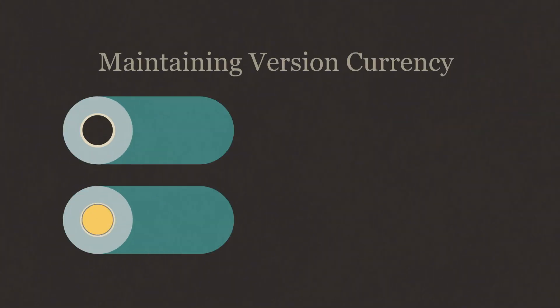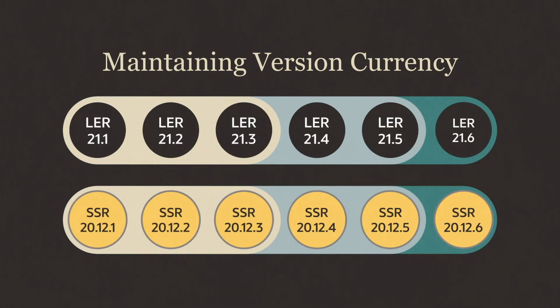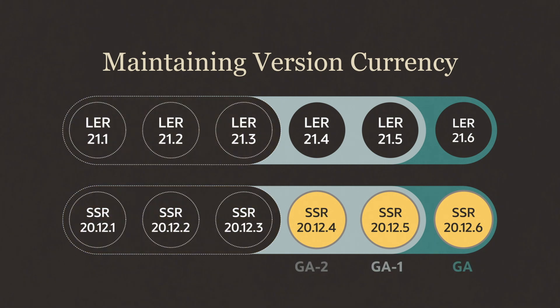Primavera P6 and Unifier will support three versions in the cloud for each release path: the GA and the two previous versions.